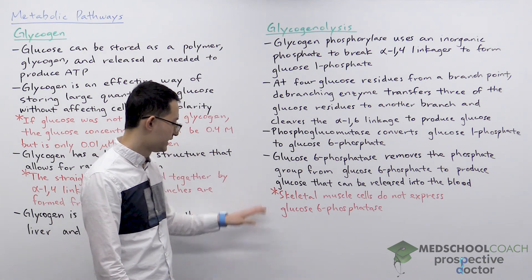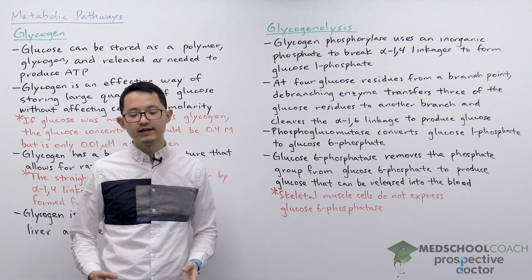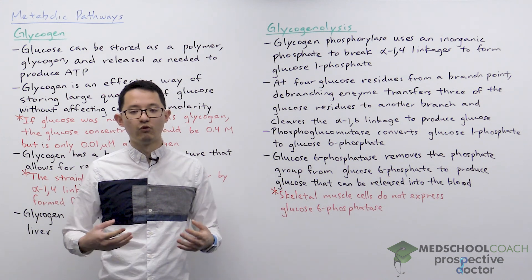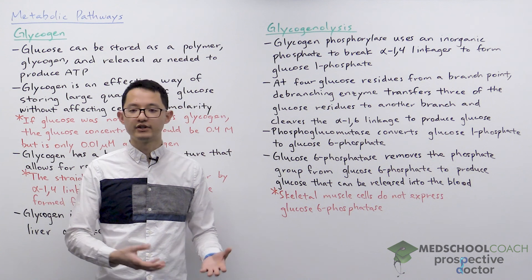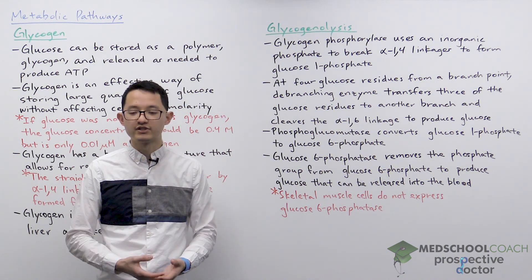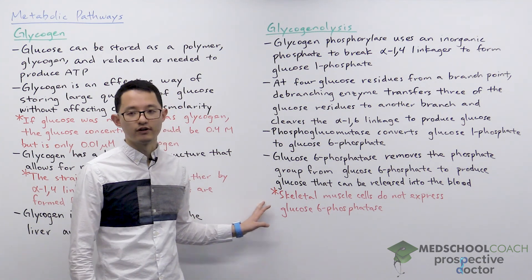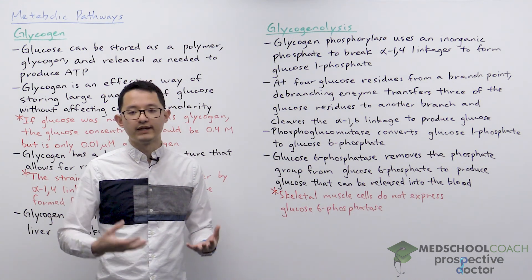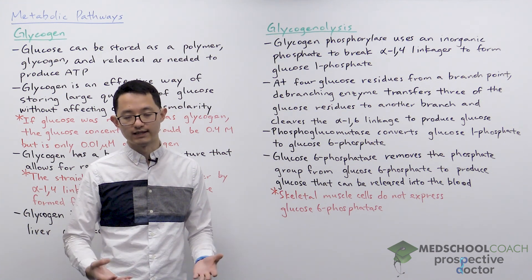You should note that skeletal muscle cells do not express glucose-6-phosphatase, because skeletal muscle cells are storing glycogen for their own use. When they break down the glycogen, the glucose-6-phosphate feeds directly into glycolysis so that the muscle cells can produce ATP for themselves. This is different from the liver, whose primary role is storing large reservoirs of glucose to be released into the body as needed.